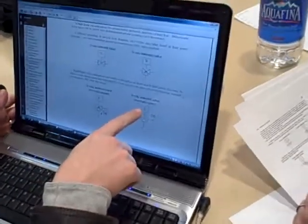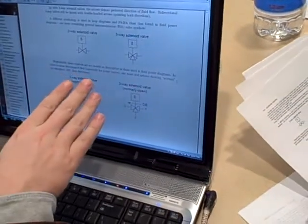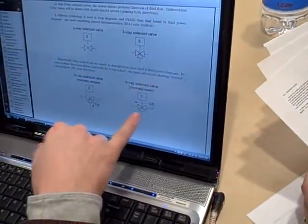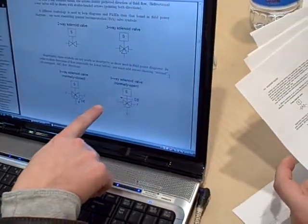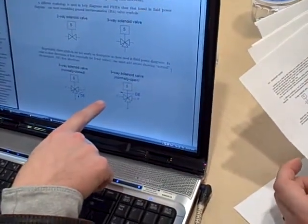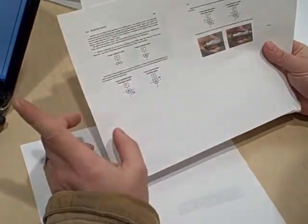Tell me how that one's working, because when that one is normally open, so normally open means there's no flow through, correct? Between the P and the C. But the de-energized shows that that is the direction of the flow when it's de-energized. Right? You're confusing me now.